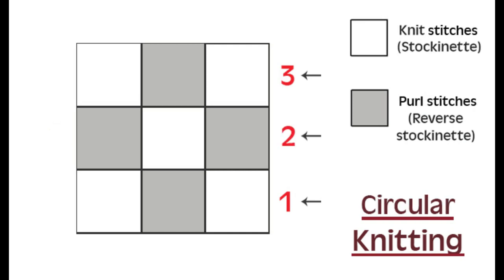If we look at the same pattern on a circular knitting chart, all the numbers are on the right-hand side, because you're knitting in the round and constantly knitting the right side — you never knit the wrong side. This makes it easier to read because you never have to reverse how you read the symbols. The white squares always represent knit stitches and grey squares always represent purls. You start at number one and go from right to left every row: row one is knit, purl, knit; row two is purl, knit, purl; row three is knit, purl, knit. It's just clearer to read.